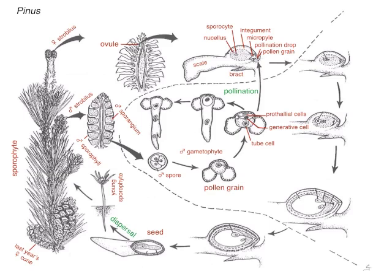After the pollen grains are inside the micropyle chamber, they grow pollen tubes. Here's a pollen tube, and there are two sperm nuclei coming down that pollen tube — and they don't have flagella. Now this whole process takes quite a bit of time. And the megasporocyte has not yet undergone meiosis, so that's the next thing that will happen.